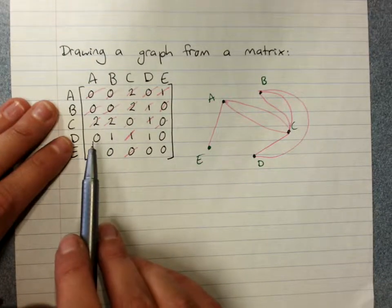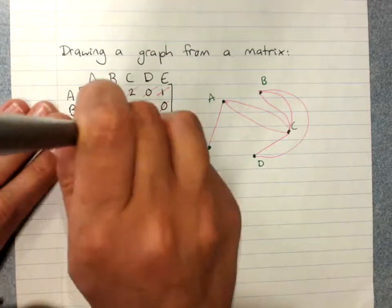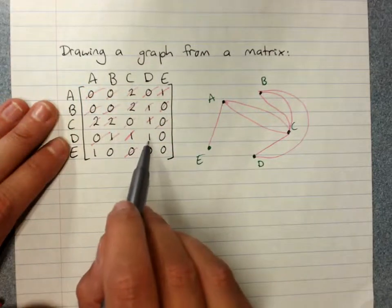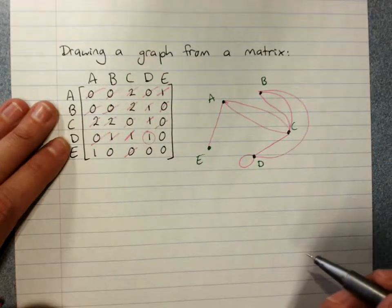D to A, nope. D to B, we've already got in because we put that in before. D to D, one. There's a loop at D. So be very careful to look for your loops.